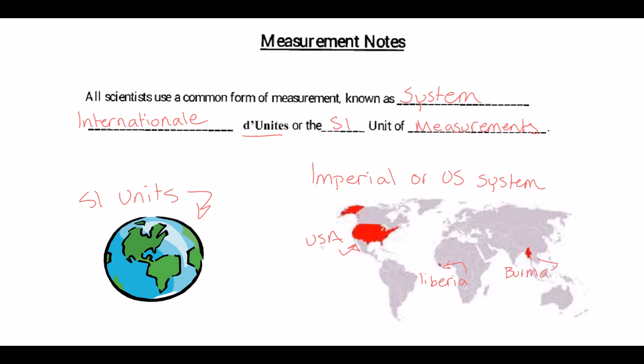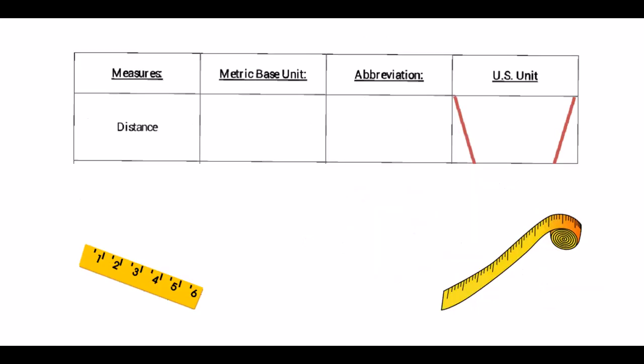If we want to measure distance, and distance is how far something has gone, we're going to use the metric base unit of the meter. Meter is abbreviated with a capital M. The US or Imperial unit might be the inch, the foot, or the mile. You can see we've started our X here because we do not use these units in science class.